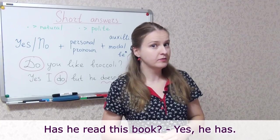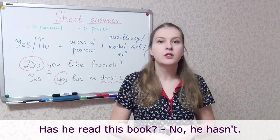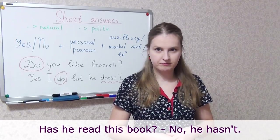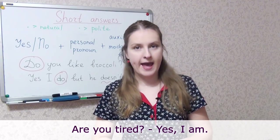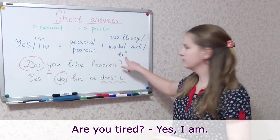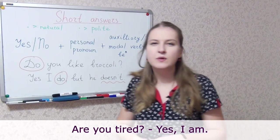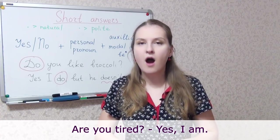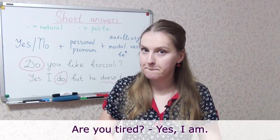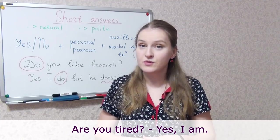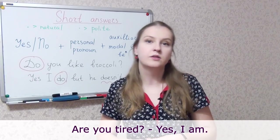Has he read this book? Yes, he has. The same auxiliary verb. No, he hasn't. One more example, are you tired? Yes, I am. Here we use one of the forms of the verb to be, but note that in a question we have are you tired? We have are. But in the answer we have yes, I am. That's because the personal pronoun I demands using am, not are, not is.